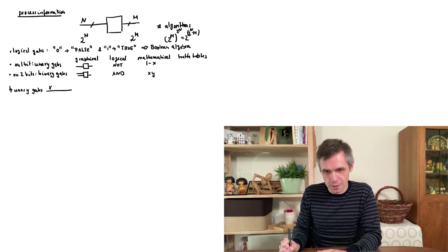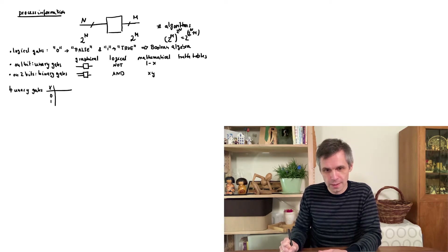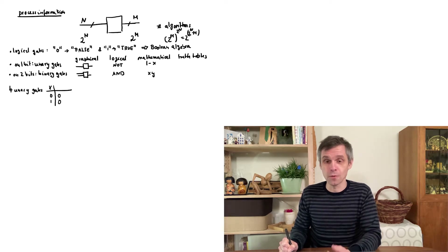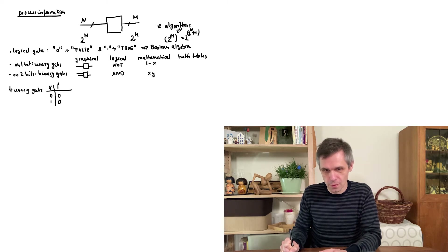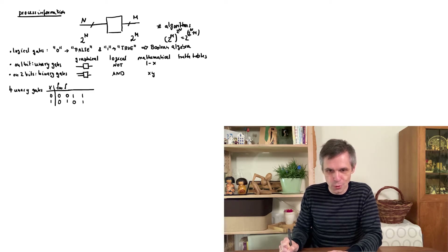In the truth table we first record all the possible input values — zero and one — which correspond to the false and true statements in Boolean logic. As an output, for instance, we could just have two zeros, or two false statements, and that specifies one possible unary gate which I'll denote as f₀₀. The other three possibilities are the combinations 0,1 and 1,0 and 1,1, denoted as f₀₁, f₁₀, and f₁₁.